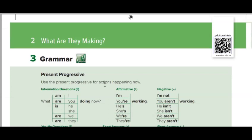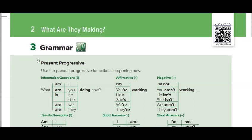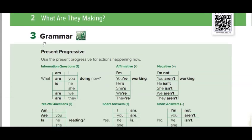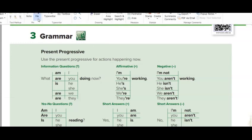Open your books page number 12. As you can see here, 'What are they making?' — ماذا يصنعون؟ We saw yesterday how they were making the film. Exercise number three: grammar — القواعد. Present progressive — المضارع المستمر. We mentioned the present progressive rule previously.